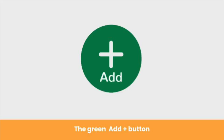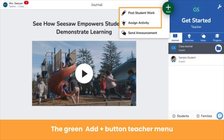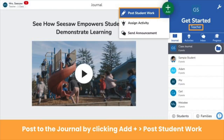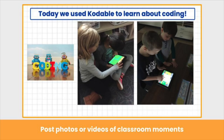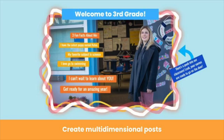The green add button is where it all begins. When teachers click the green add button, you see this menu. We'll focus on the first two options in this video. To post to the class journal as a teacher, click the green add button, then post student work. You have access to all Seesaw learning tools to create your post. For example, use the photo or video tool to share classroom moments, or use a combination of tools to create multi-dimensional announcements, resources, discussion questions, and more. Upload a photo, add text labels, use the drawing tools, and even add your voice to create posts that get students excited, like this welcome post.